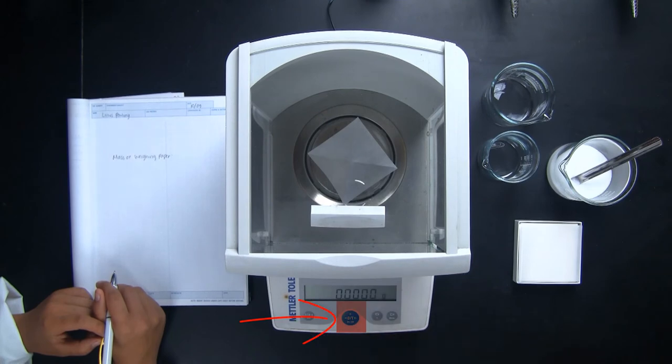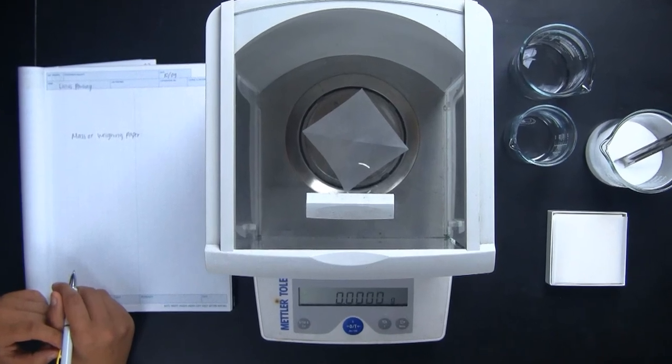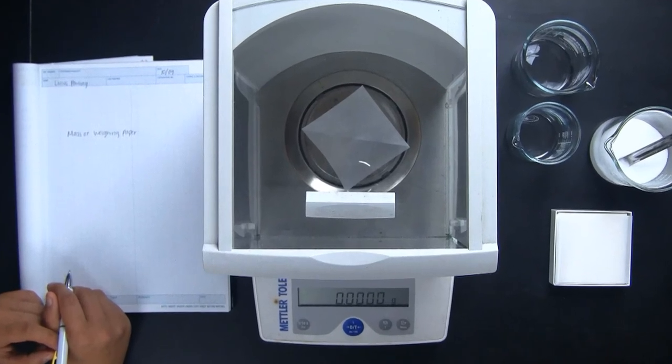Now, when the weighing paper is on the balance pan, Ash hits the zero or the tear button, and this will re-zero the balance with the weighing paper on the pan. Notice how the reading is zero and the weighing paper is on the balance pan.